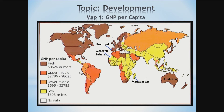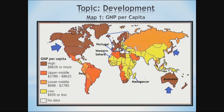As observed on Map 1, it clearly shows that the countries in Western Europe, Japan, North American countries, and Australia have much higher values than LEDCs. Examples of LEDCs here are India, Bangladesh, and over to Africa, Nigeria and Zimbabwe.